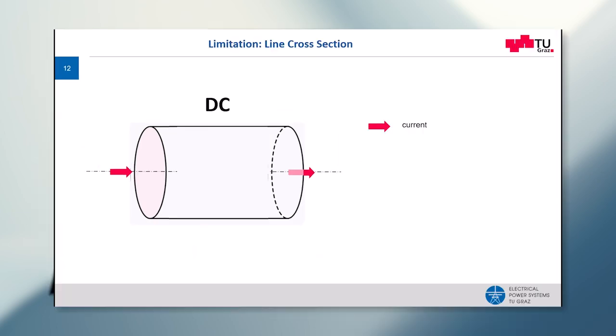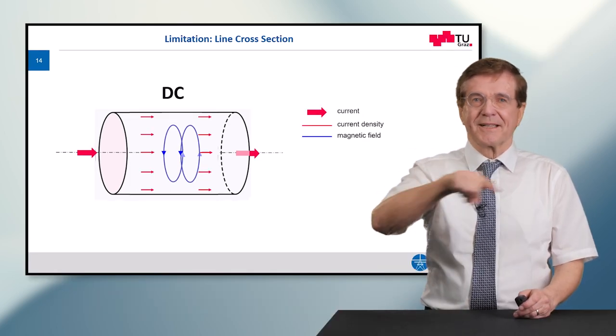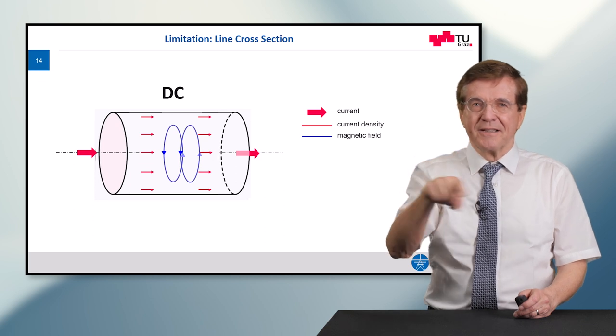Let's make a sidestep. The sidestep is we watch what happens in a DC system concerning the current density. In a DC system, the current density is level all across the cross-section. Also due to electromagnetic laws, there is a magnetic field circling around this current.